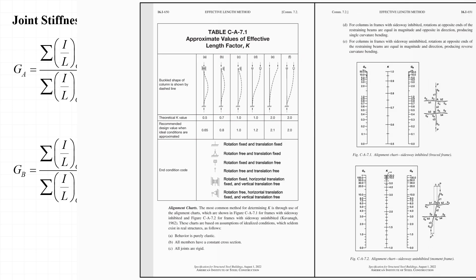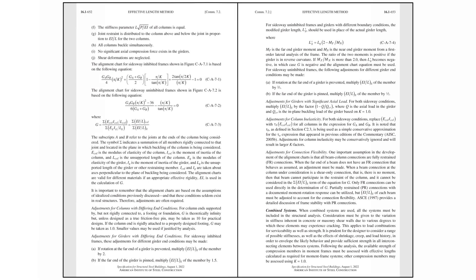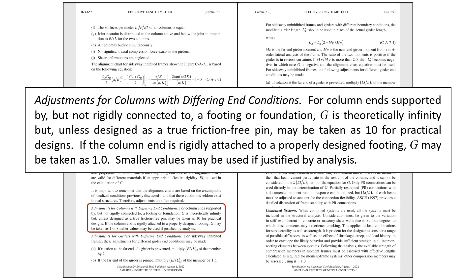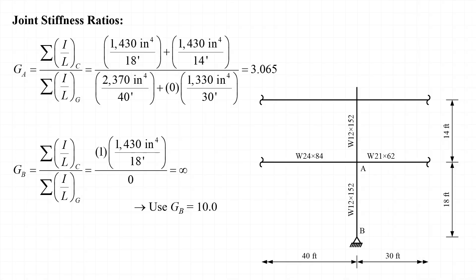The effective length method is covered in Appendix 7 of the 2022 edition of the AISC specification, and the alignment charts are found in the commentary to Appendix 7. Reading through the commentary, it states that for a column supported by but not rigidly connected to a footing or foundation, G is theoretically infinity but unless designed as a true friction-free pin, may be taken as 10 for practical designs. So we'll take G equal to 10.0 for the pin base at joint B.